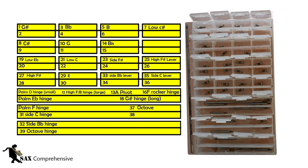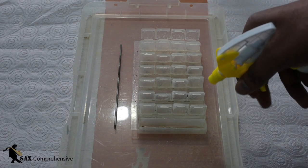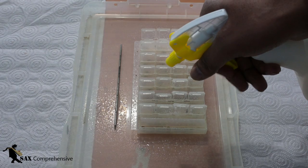So starting with the pivot screws and hinge rods. I place my pivot screws and hinge rods in an organizer made from a pill organizer. I then sprayed them with a degreaser and waited according to the instructions on the bottle.